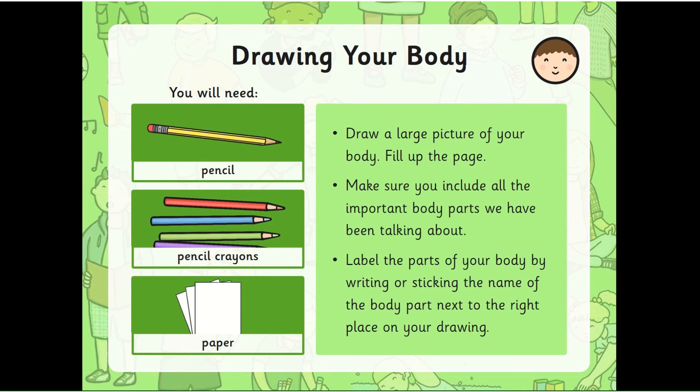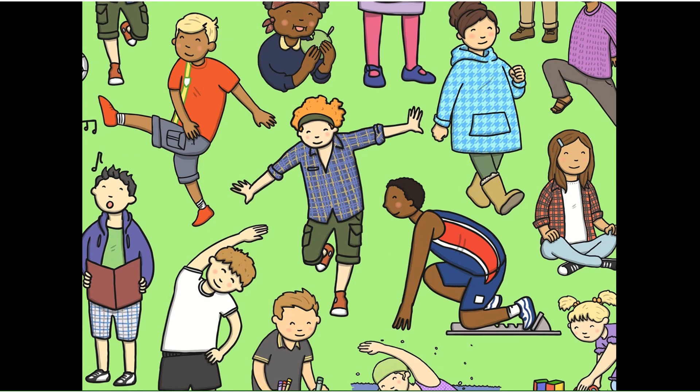If you've got some colours and you want to put some colours on your body, then you can do. And then when you've drawn your body and the body parts and labelled them, ask your grown-up to take a photo and send it to Mrs Tarry if you're in Year 2, Miss Creaser if you're in Hall 2, or to me if you're in Hall 1. Well done everybody. Keep those bodies busy. Bye!